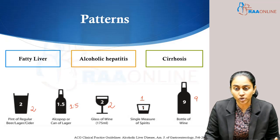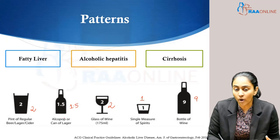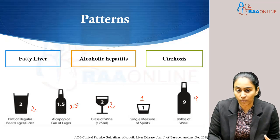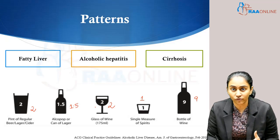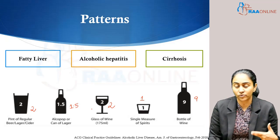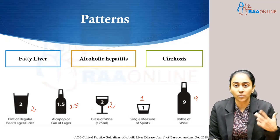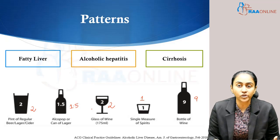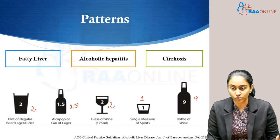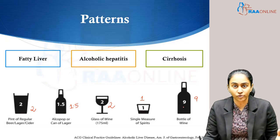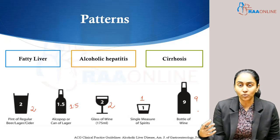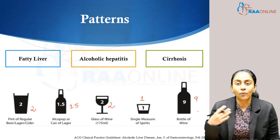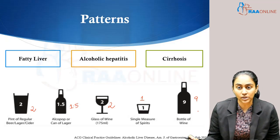So to summarize the measures: a single measure of spirit is one measure; an alcopop or a can of lager has 1.5 measures; a usual pint of regular beer or a glass of wine has two measures. So if somebody says they have drunk one glass of wine or one pint of regular beer, that is two drinks. In a bottle of wine there is the equivalent of 9 measures. Based on this you can calculate the quantity of drinks your patient consumes every day.